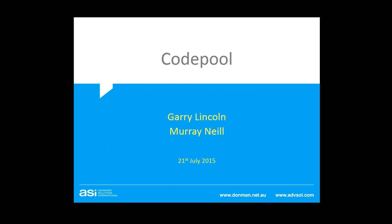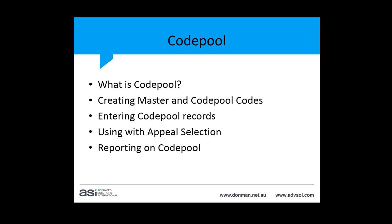Today we're looking at Code Pool, which is an area of the domain data and the donor screen specifically where sometimes we need to put a series of codes or some information that won't quite fit into the normal structure of the system. We'll look at what Code Pool actually is, where you'll find it on the donor screen, how it interrelates with mail lists, where you can create the codes, how to use the appeal selection with Code Pool records, and also reporting and other ways to enter the data.